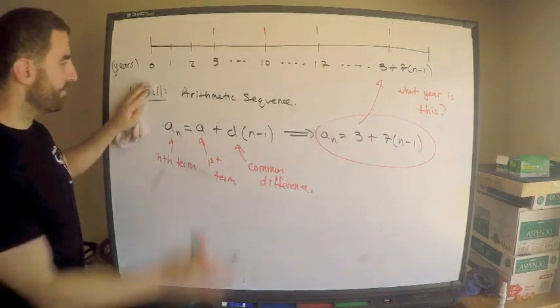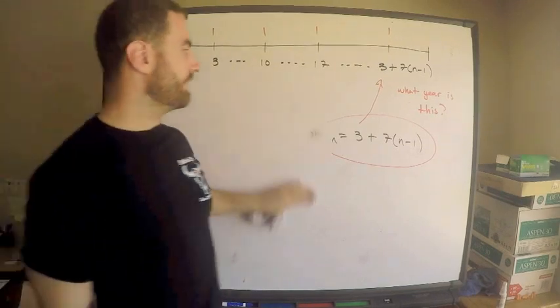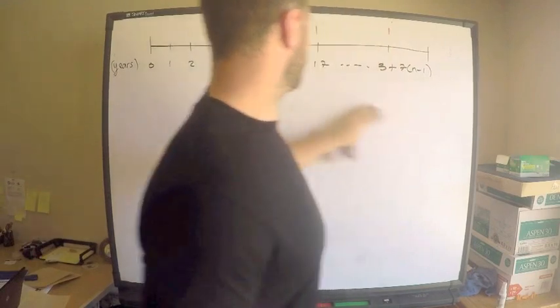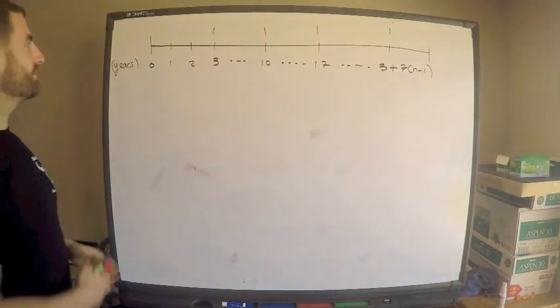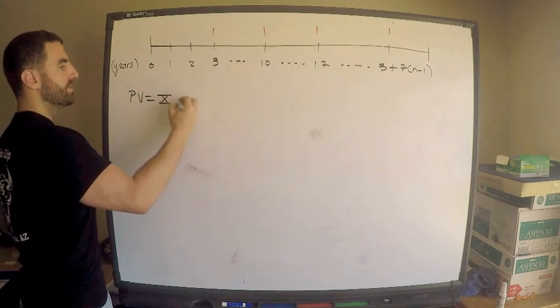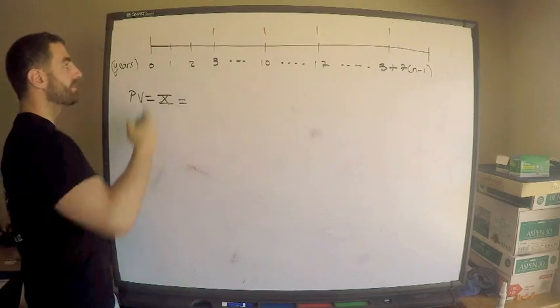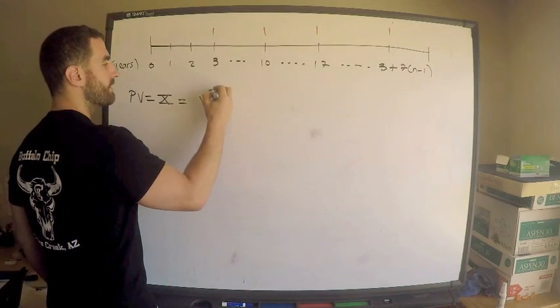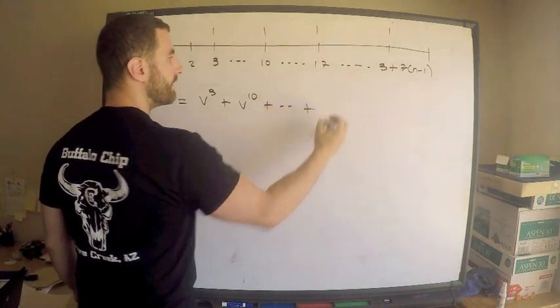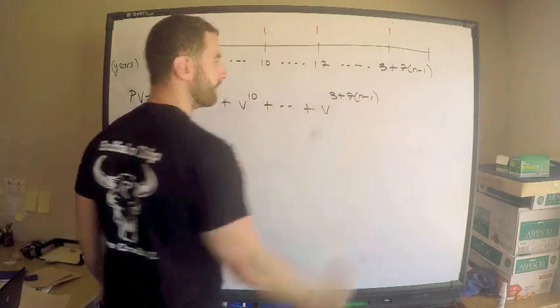Let me show you what I mean. Okay, hopefully this makes sense to you. Now I'm just going to find the present value, and I think they call it x. I don't really care what they call it, but anyway I'm going to find the present value. So x, which is the present value, PV, which is x, is equal to, okay just discount all these terms back to zero. So this is v cubed plus v to the 10 plus dot dot all the way to v to the 3 plus 7n minus 1.